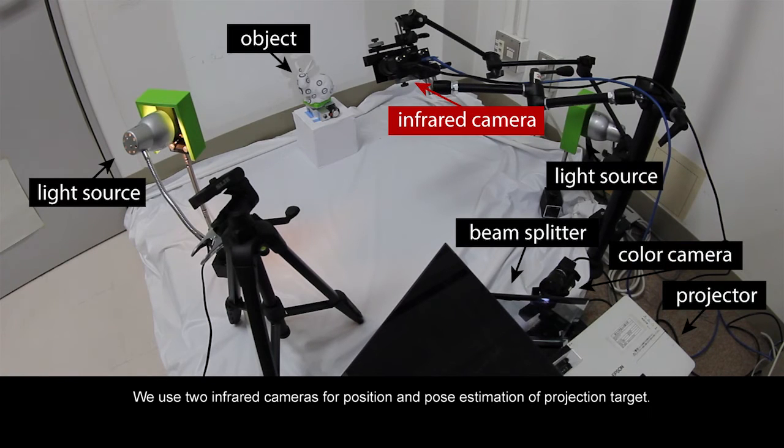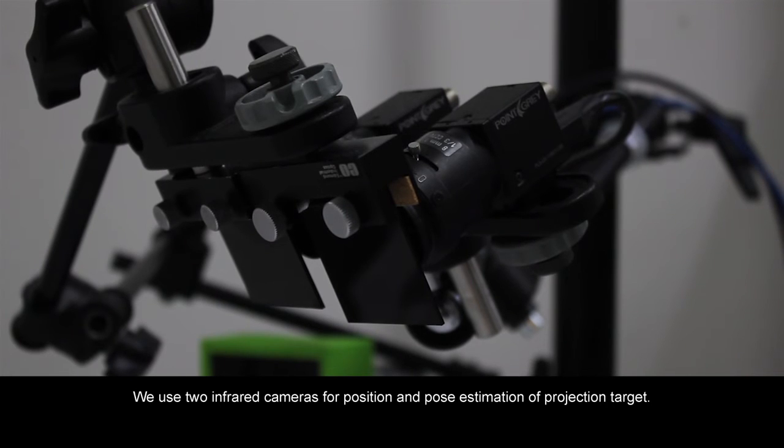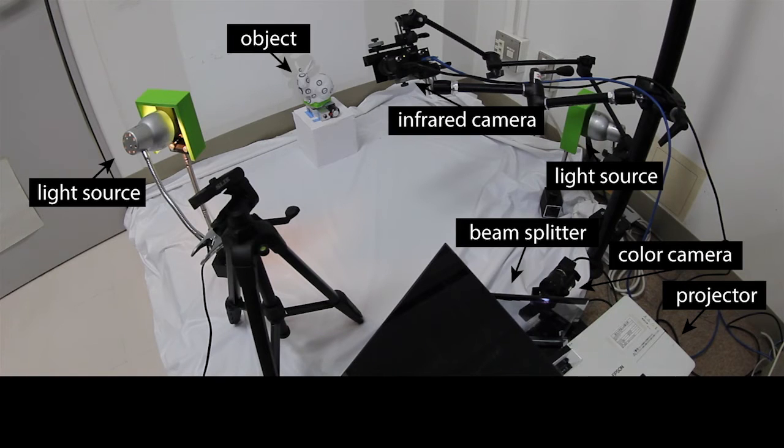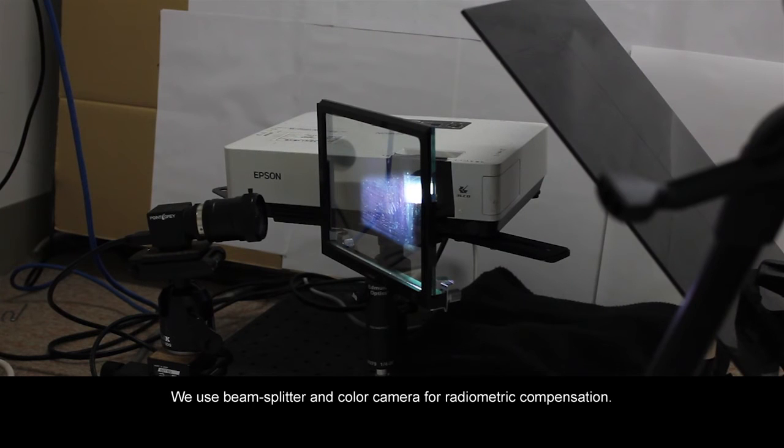We use two infrared cameras for position and pose estimation of the projection target. We use a beam splitter and color camera for radiometric compensation.